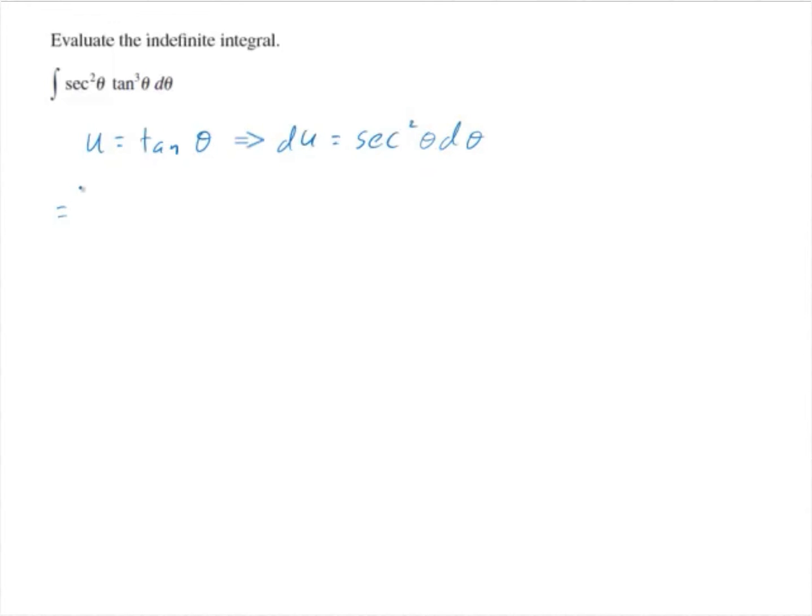Using these substitutions, we will have the integral of u cubed times du. This tangent of theta was replaced with u, and secant squared theta d theta is replaced with du.